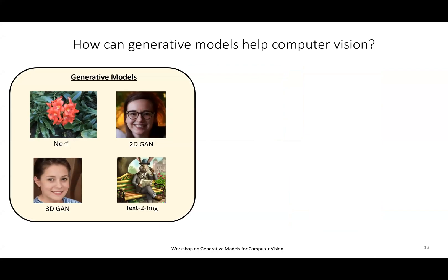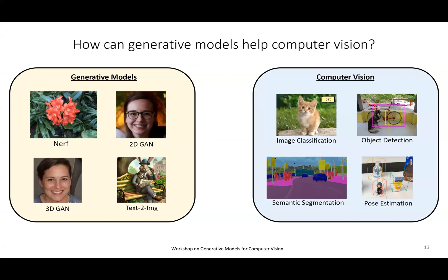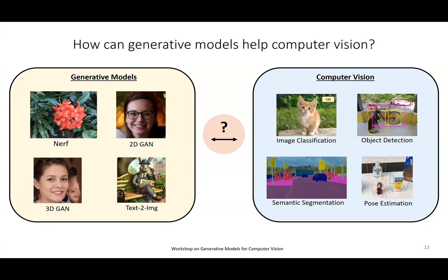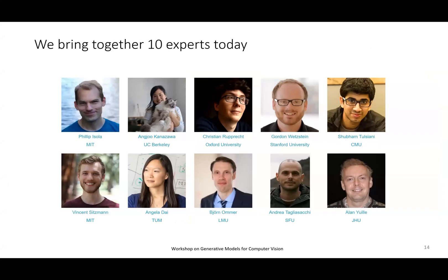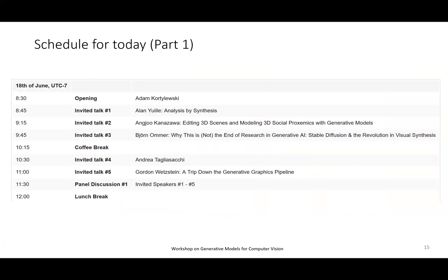On one hand we have generative models that create very impressive pictures, and on the other hand we have classic computer vision tasks — classification, detection, segmentation. We're going to ask what is the relation between these two realms, and we're going to ask 10 world-class experts about this. They will present talks this morning and in the afternoon, and also answer questions in panel discussions.